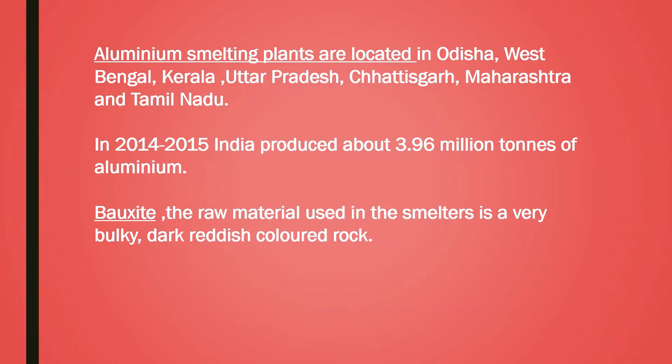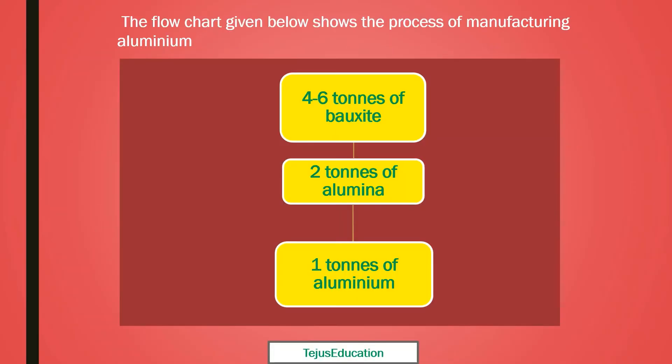Now, the raw material for this industry is bauxite — again, a very important MCQ question. Bauxite, the raw material used in smelters, is a very bulky, dark, reddish-coloured rock. The flowchart shows the process of manufacturing aluminium: 4 to 6 tons of bauxite is converted to 2 tons of alumina, and at the end, 1 ton of aluminium. Please go to page 74 of the geography textbook to understand this process in detail.